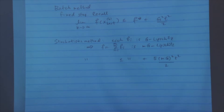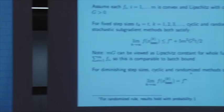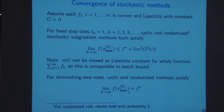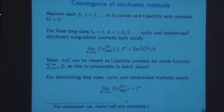For diminishing step sizes we get the same result as for a single function: stochastic gradient descent converges to the optimal solution in the limit. So far we've established that you don't do much worse in terms of progress with stochastic methods than with the batch method.